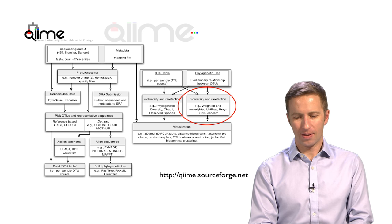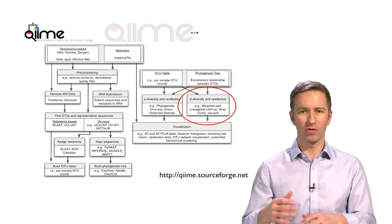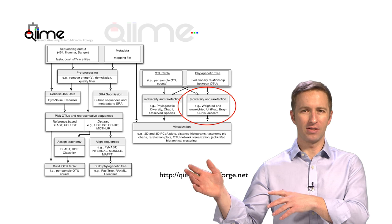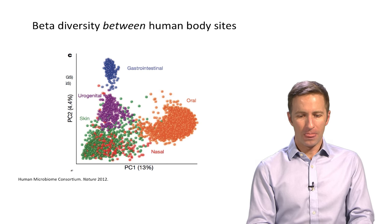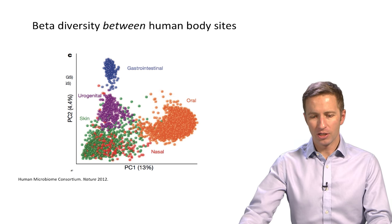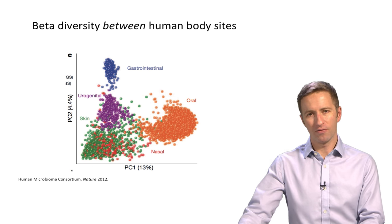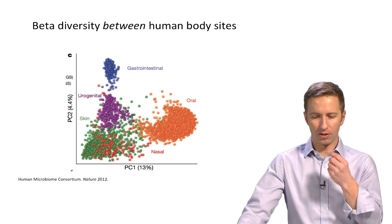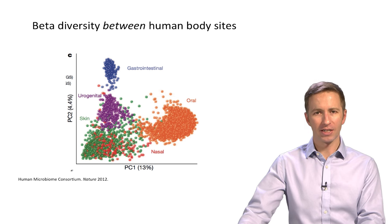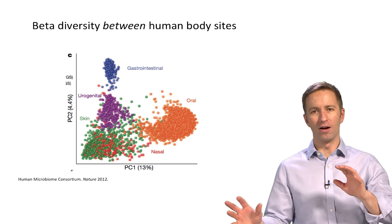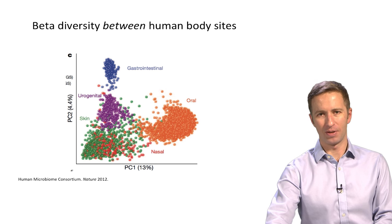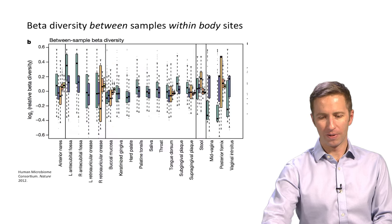This is one of the steps that we perform after we've processed all the sequences and generated an OTU table. Beta diversity is the diversity between environments. For example, we looked at this plot from the Human Microbiome Project showing the overall clustering of the different body habitats by their microbiomes.